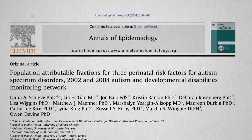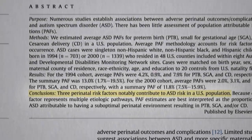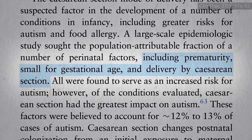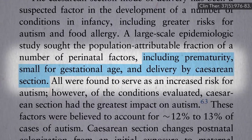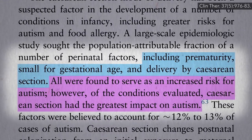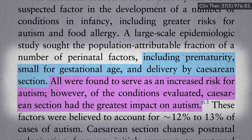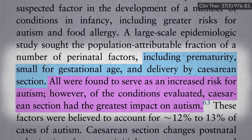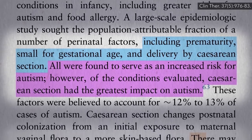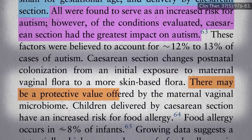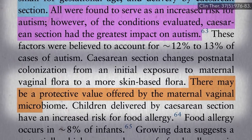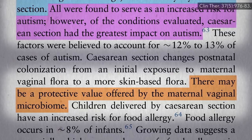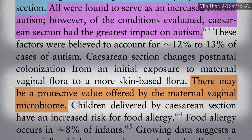There are some perinatal risk factors for the development of autism, including premature birth, low birth weight, and delivery by cesarean section — particularly the C-section. What does that have to do with the microbiome? Well, there may be a protective value offered by the maternal vaginal microbiome that the infant misses out on when they instead come out through a surgical incision.